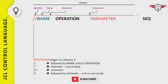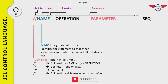The name field begins in column 3 and is used to provide a name to a JCL step. For a job statement, the name is required; for EXEC or DD statements, it is optional. The minimum length of the name field is 1 character and the maximum is 8 characters.